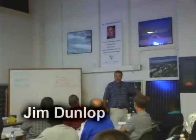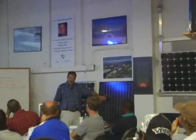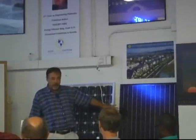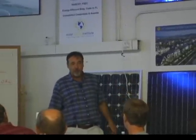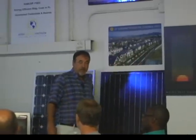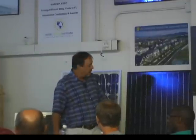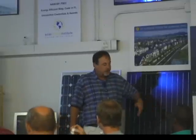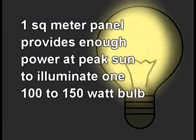Let's call this panel one square meter for example purposes — a thousand watts of solar power. If we converted that solar power one hundred percent to electrical energy, we could run ten hundred-watt light bulbs. But the fact of the matter is we're converting sunlight to electrical energy at about ten to fifteen percent in the field. So a one square meter panel is going to provide enough power at peak sun to illuminate a 100 to 150 watt light bulb. That's the nature of the conversion efficiency.